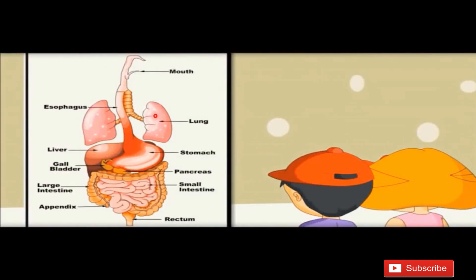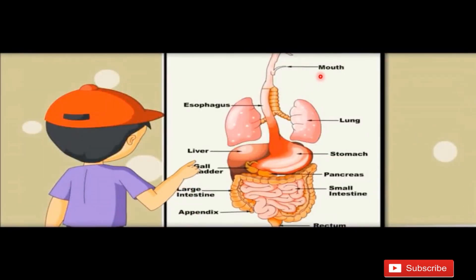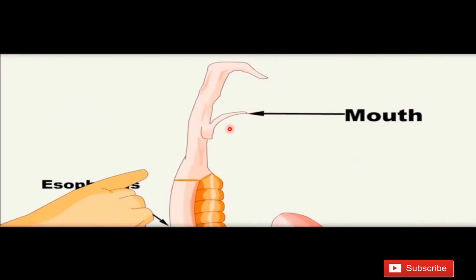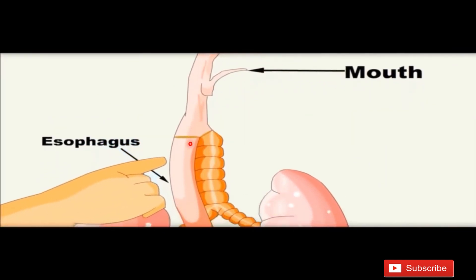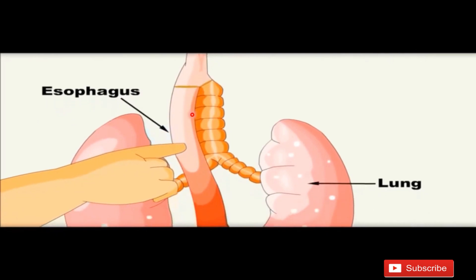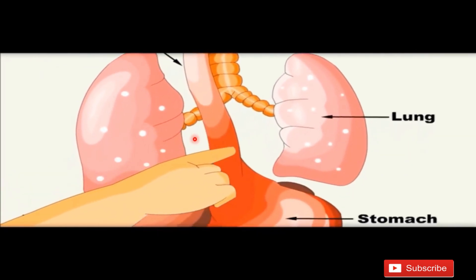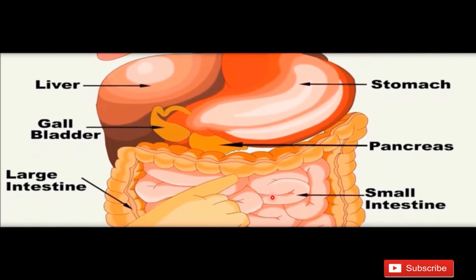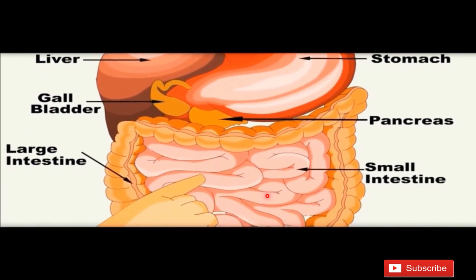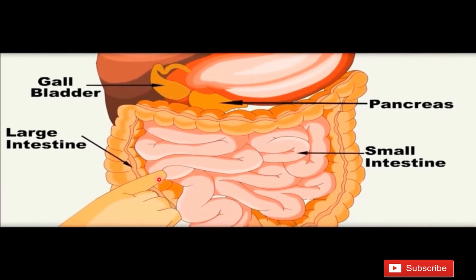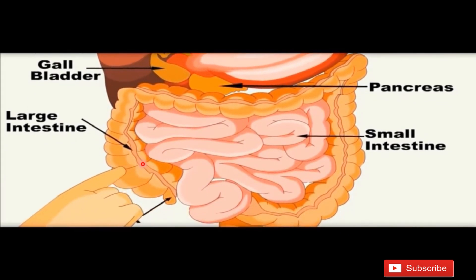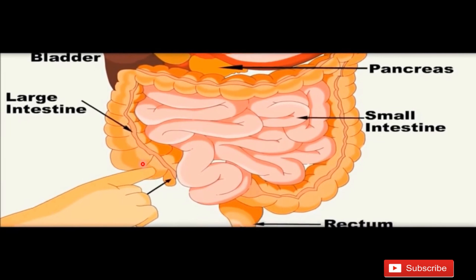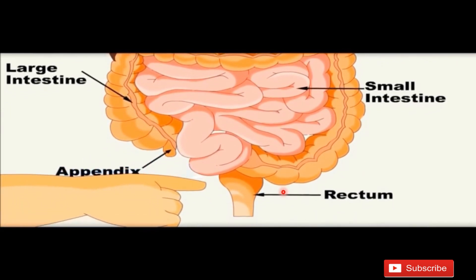You can see in this picture: digestion starts from the mouth. From the mouth, it enters into the pharynx. From the pharynx, it enters into the esophagus. From the esophagus, it enters into the stomach. From the stomach, it enters into the small intestine. From the small intestine, it enters into the large intestine. And from the large intestine, the undigested food expels out from the body through the anus.